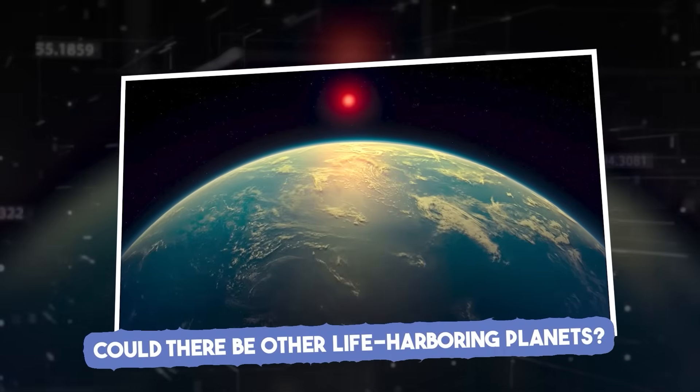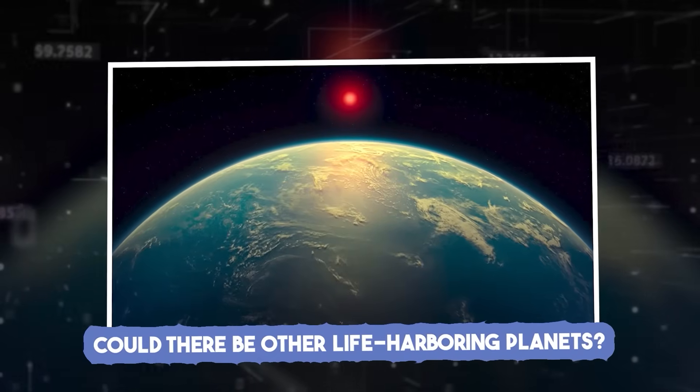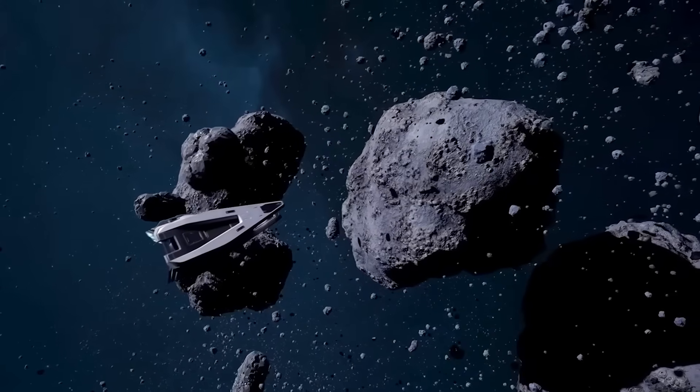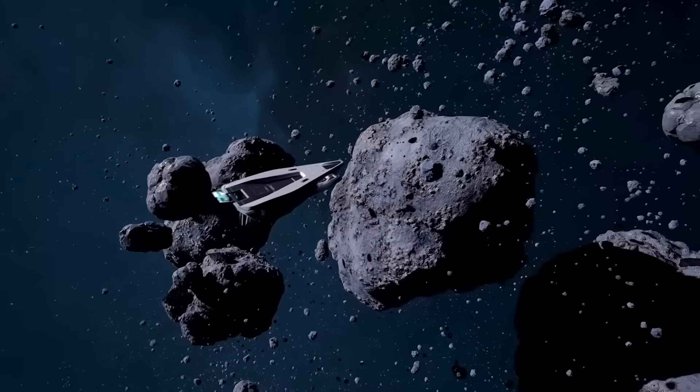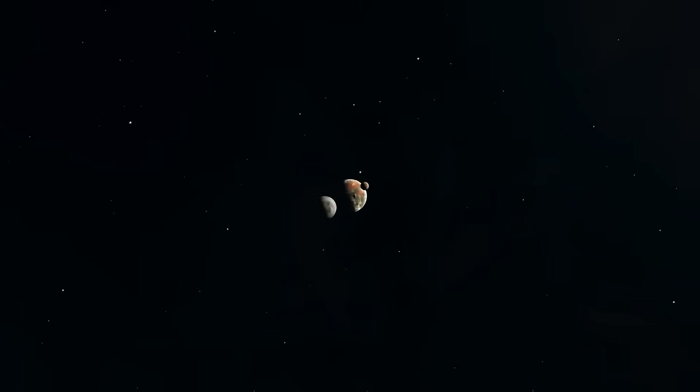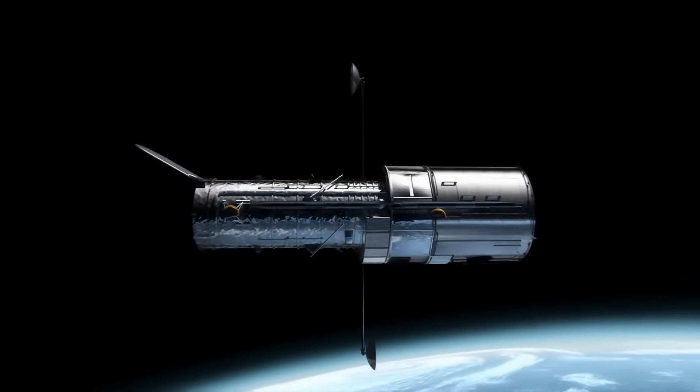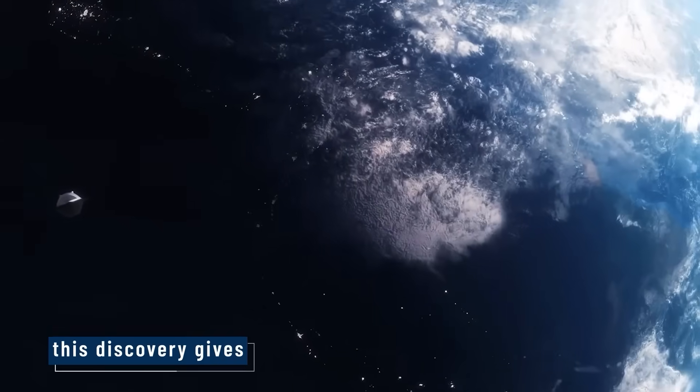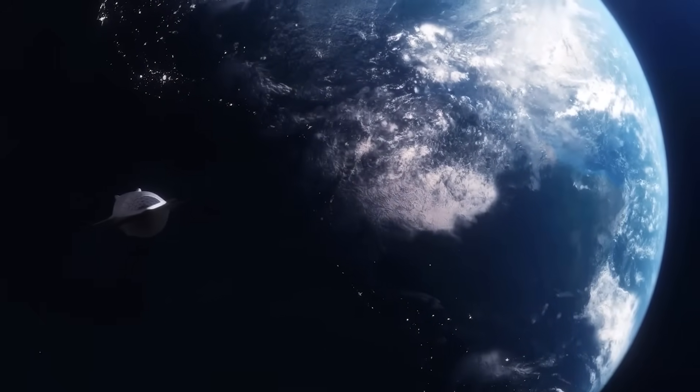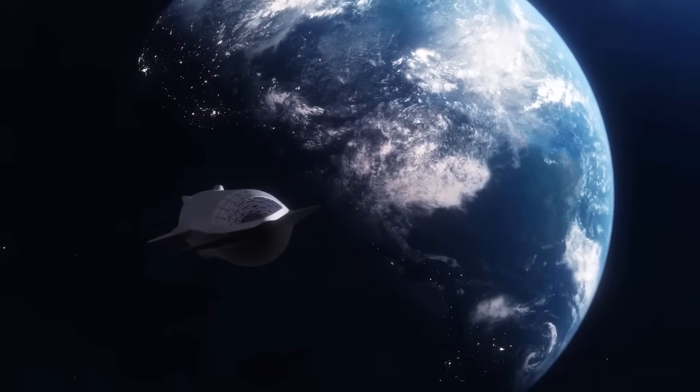Could there be other life-harboring planets? TWA-7b itself can't support life. It's a gas giant like Saturn, with no solid surface. But that doesn't mean the system is lifeless. In fact, this discovery gives us hope that smaller, rocky planets may be nearby, still hidden in the disk's dust and gas.